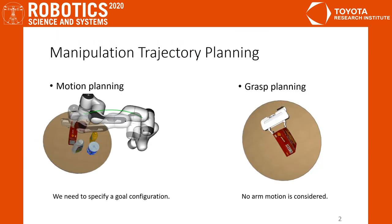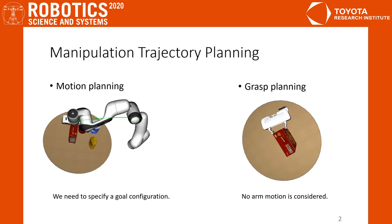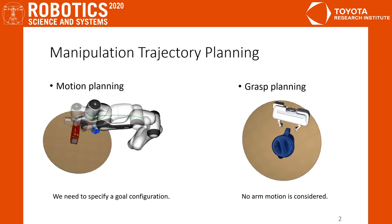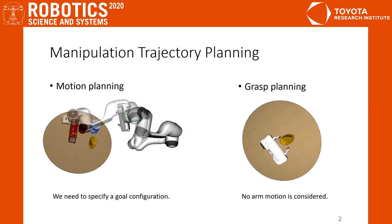Motion and grasp planning are two fundamental tasks for a robot manipulator to pick up an object. Motion planning considers finding a trajectory from a start configuration to a specified goal configuration. Grasp planning only considers synthesizing grasp poses.